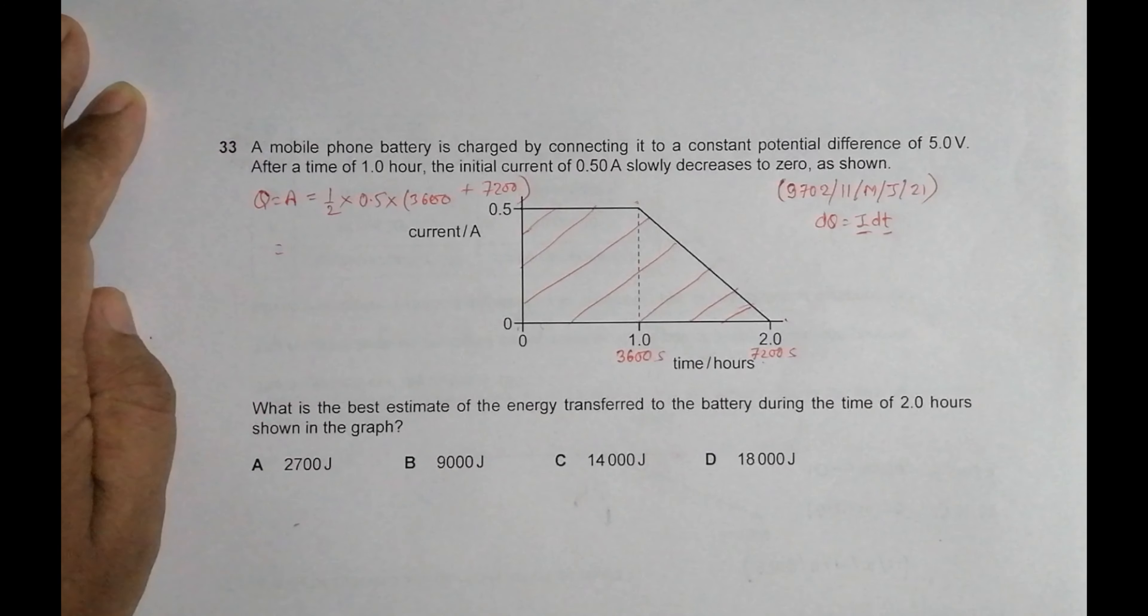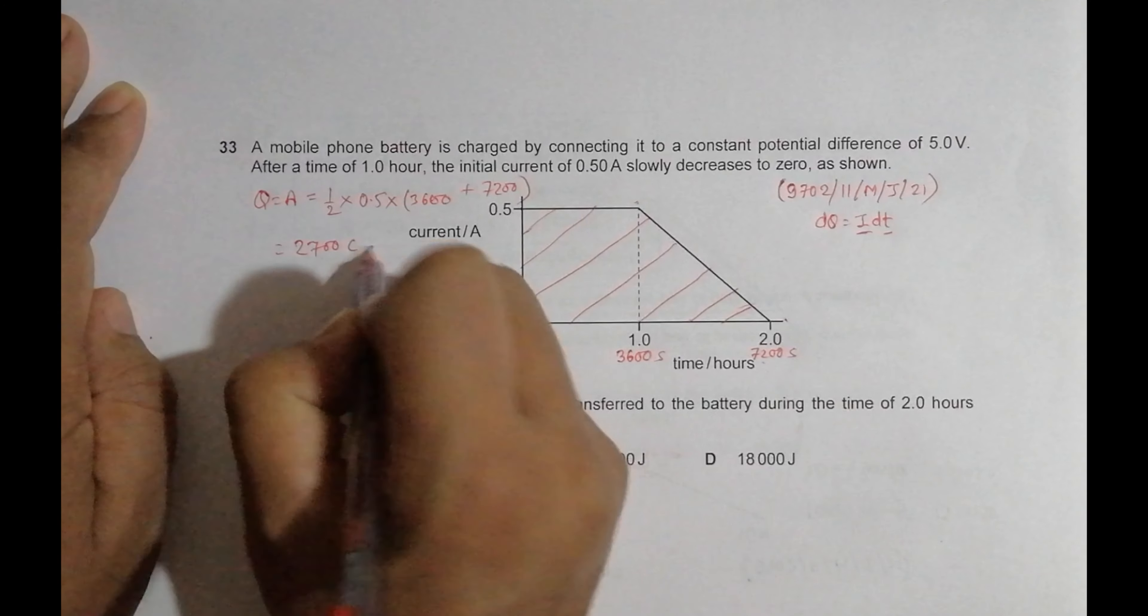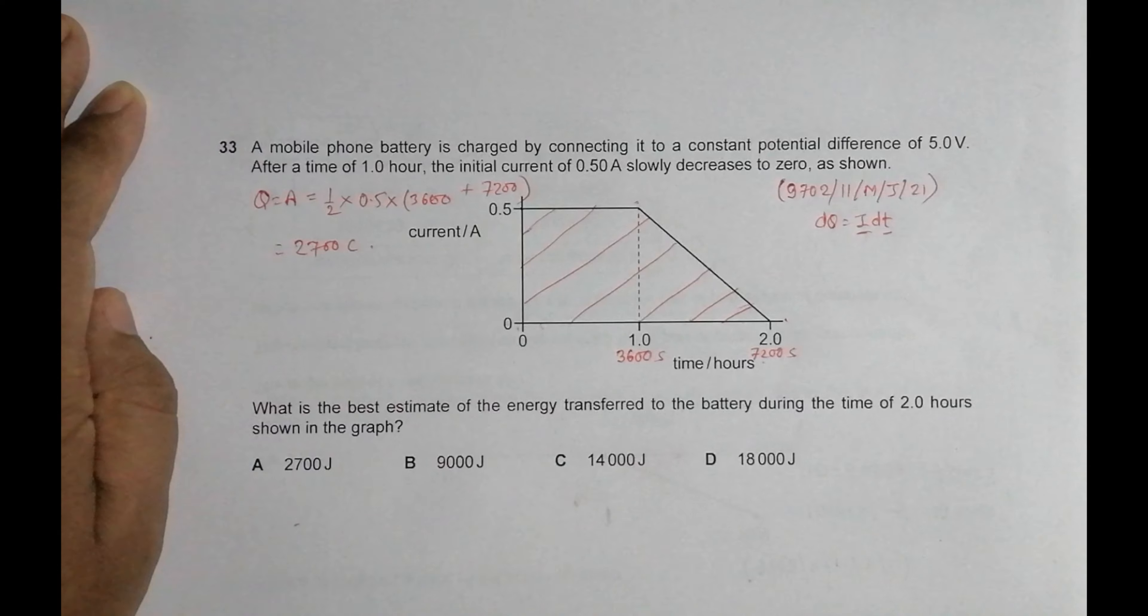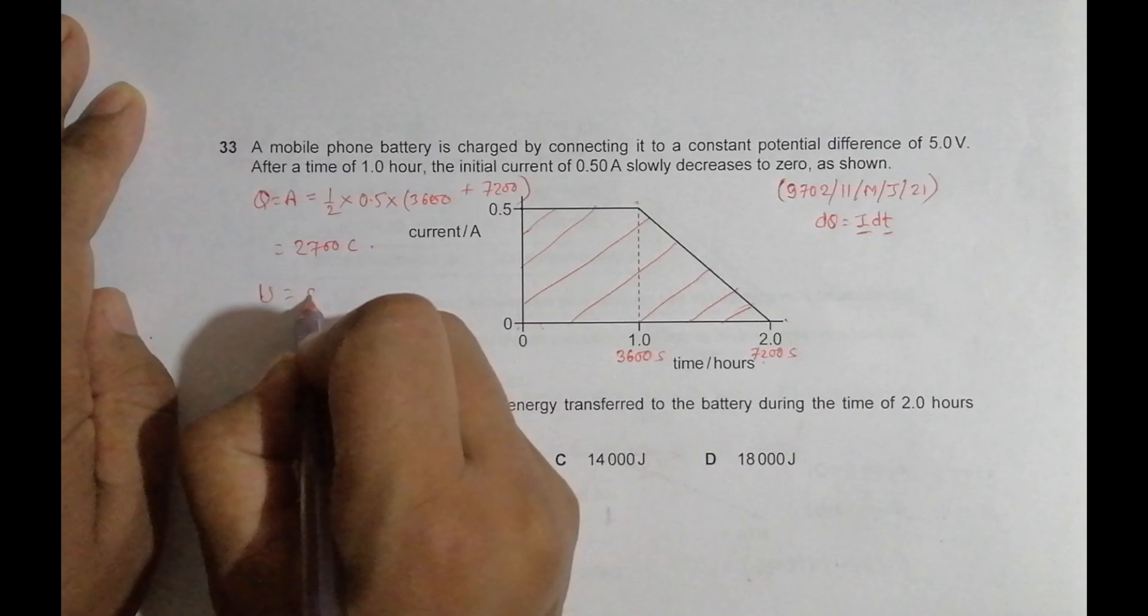So 2700 coulombs of charge. Now the energy transferred is equal to charge times voltage, E = QV. This charge is 2700 coulombs and the voltage is 5 volts.